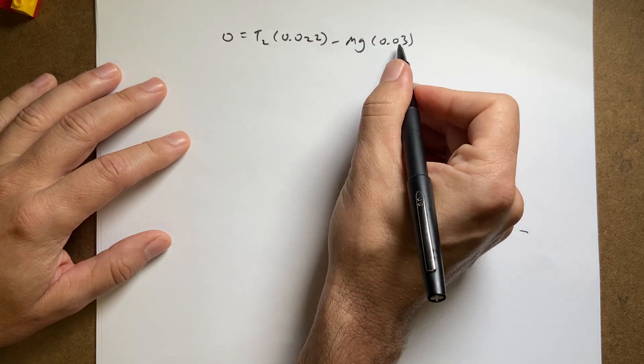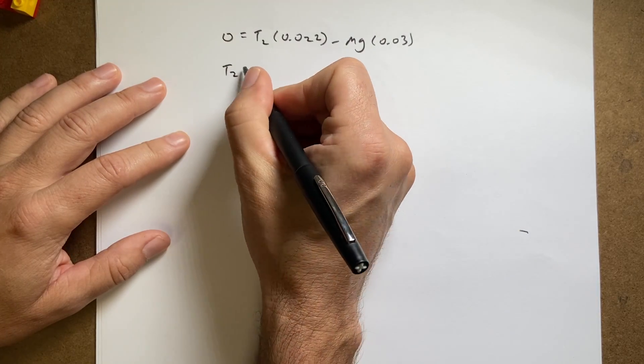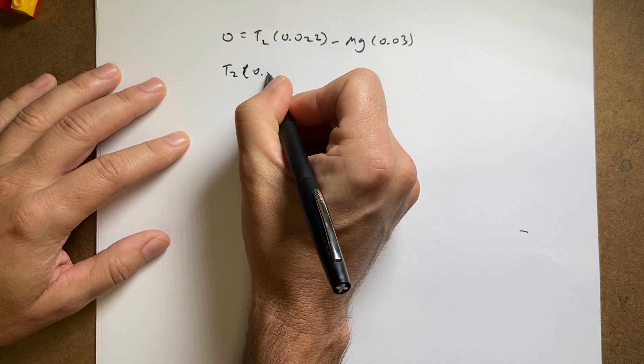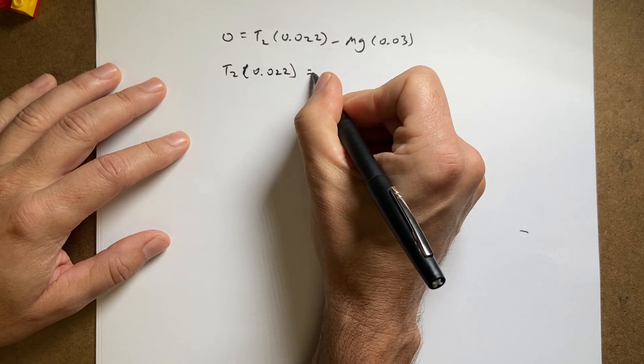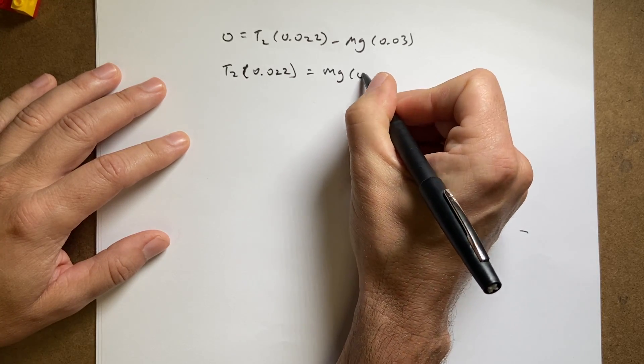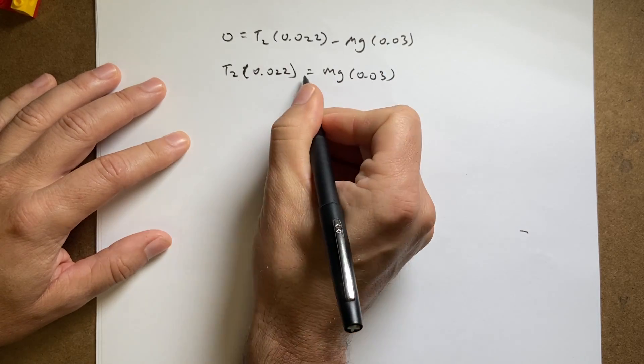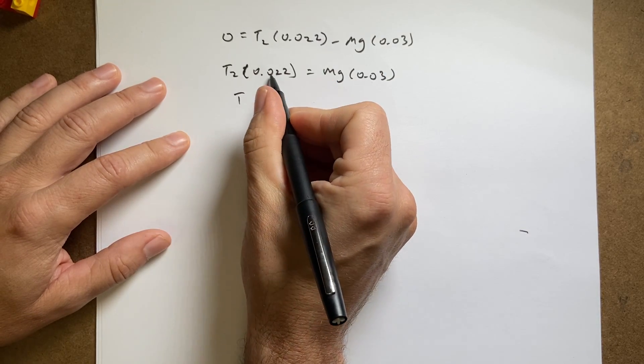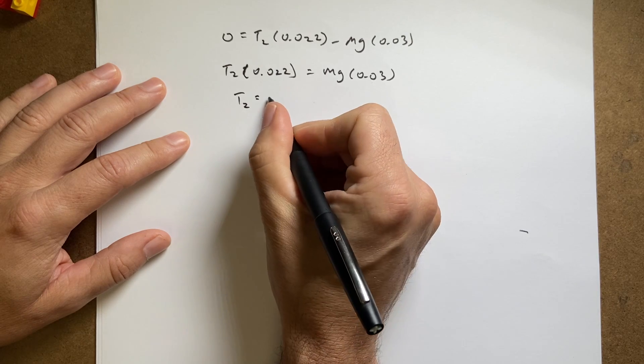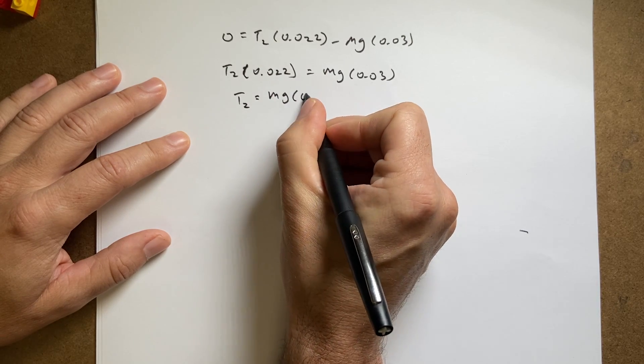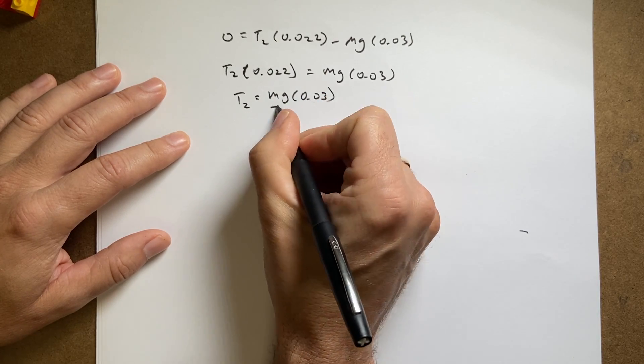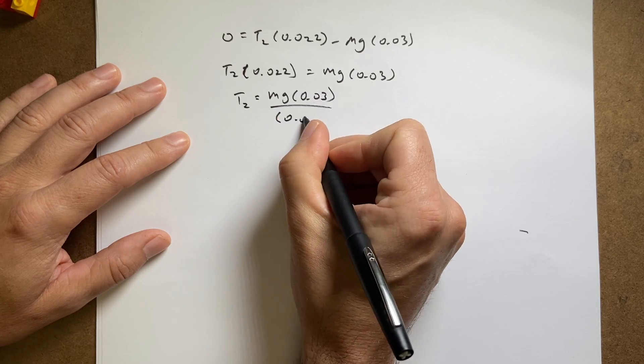I'm going to add mg to both sides, and I get T2 times 0.022 equals mg times 0.03. Now I'll divide both sides by 0.022, T2 equals mg times 0.03 over 0.022.